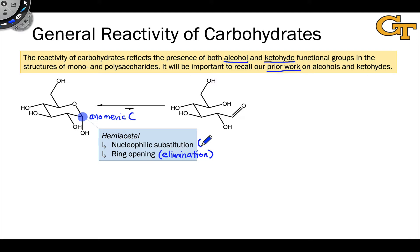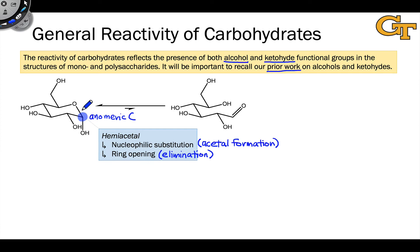An example of this that we've seen previously is acetal formation. The hemiacetal contains a hydroxyl group linked to the anomeric carbon. To form an acetal, an equivalent of alcohol comes in and displaces this OH group, usually after protonation of the hydroxyl to form H₂O. In a carbohydrate context, nitrogen-containing compounds and other nucleophiles can also engage in nucleophilic substitution at the anomeric carbon. Acetal formation from simple ketones and aldehydes is mechanistically identical to these reactions at the anomeric carbon.